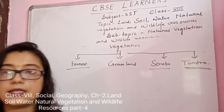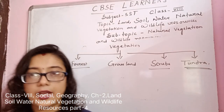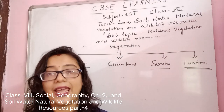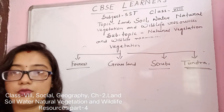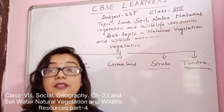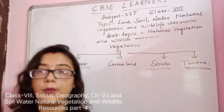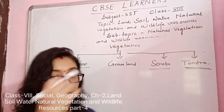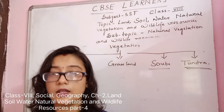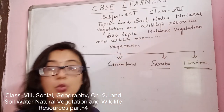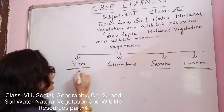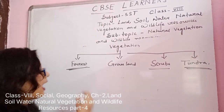Tundra is the vegetation of cold polar regions. There will be very rare and scarce vegetation in those areas. The vegetation of cold polar regions comprises mainly mosses and lichens — non-vascular plants which do not have xylem and phloem to transfer water and food inside the plants. Instead, they have other internal tissues. Mosses and lichens are the non-vascular plants predominant in tundra vegetation.